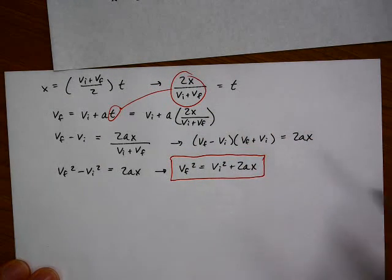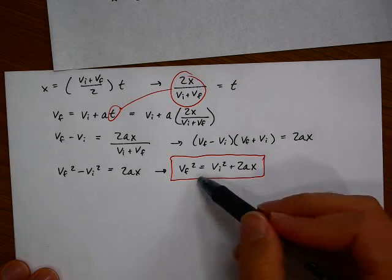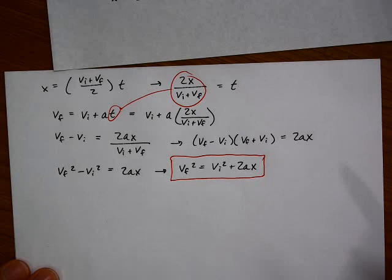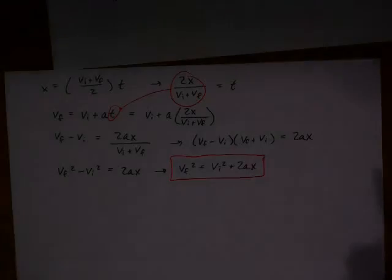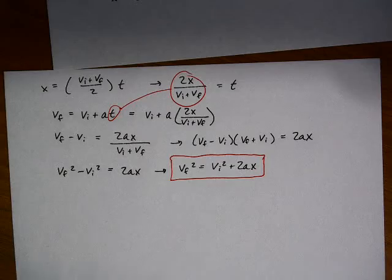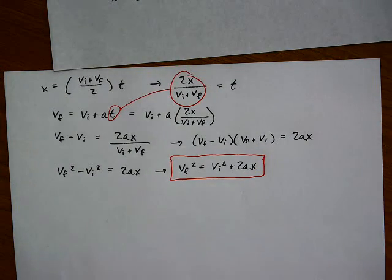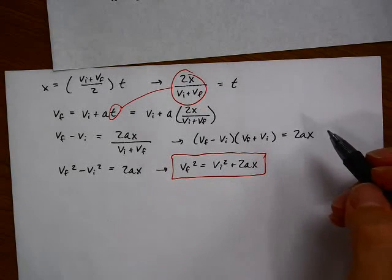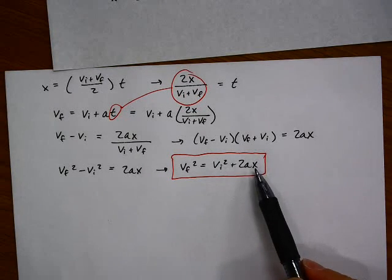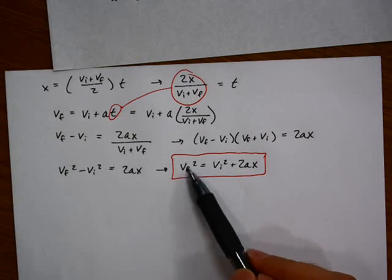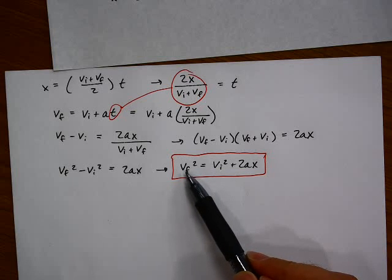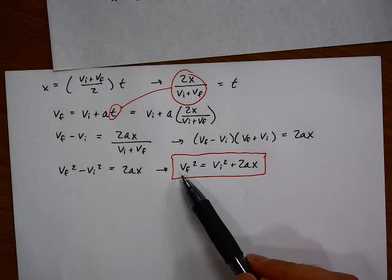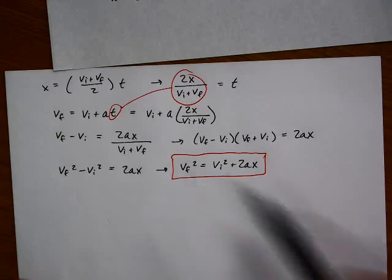Notice this equation does not have a T, there is no time variable. We use this equation typically when we don't know how long something takes, but we know how far it's traveled. When we plug into this equation, we get a final velocity squared. The last step is always to take the square root to get the final velocity. Here is an example.